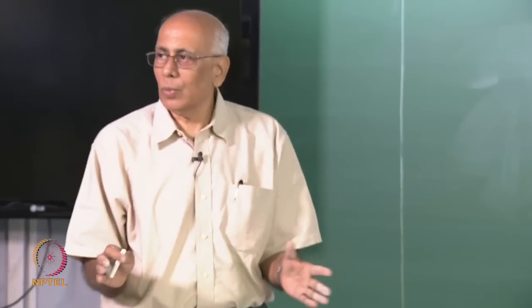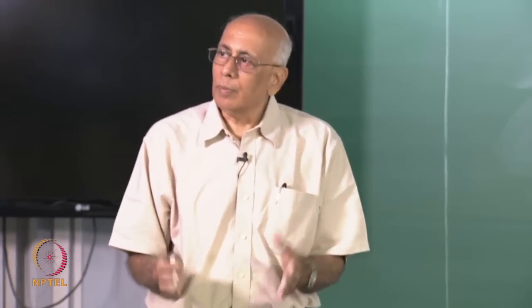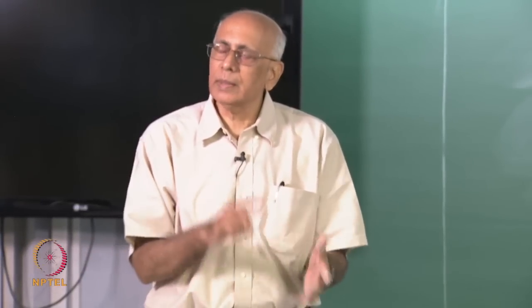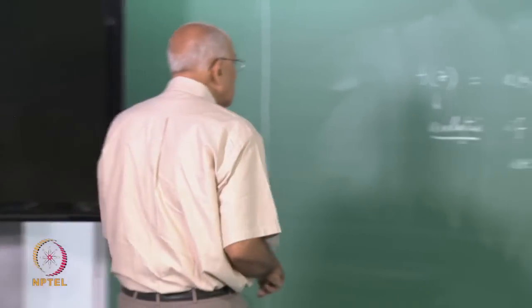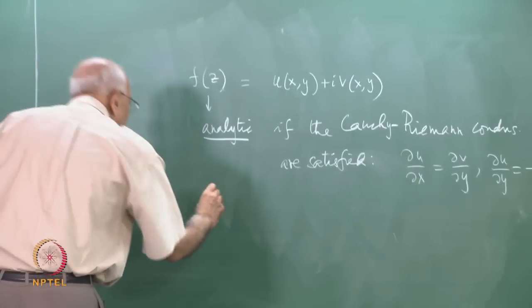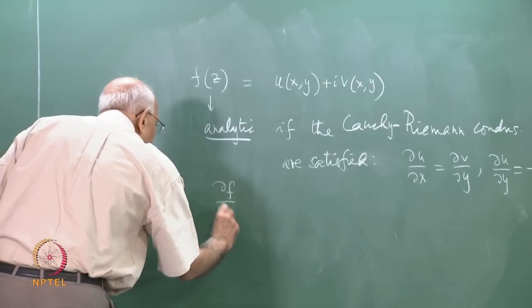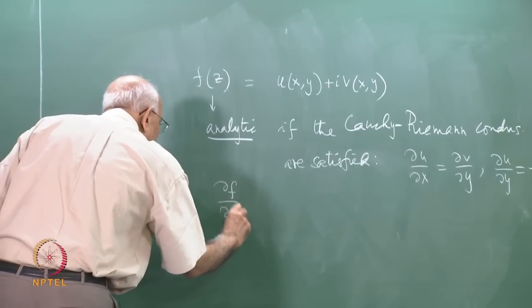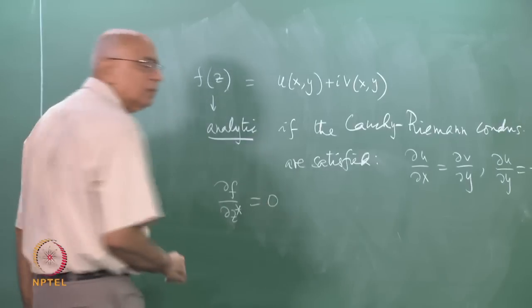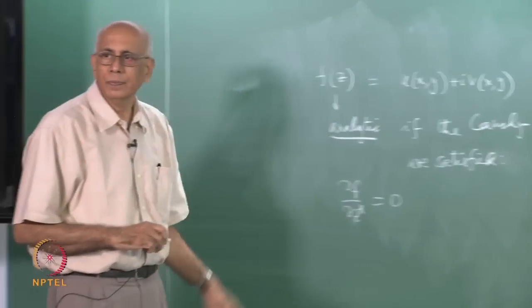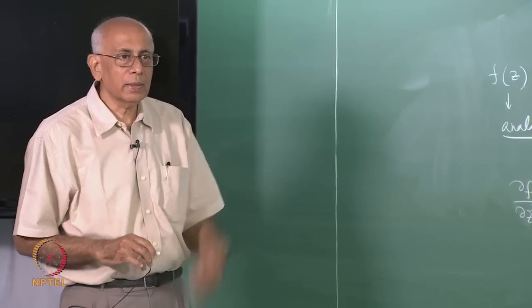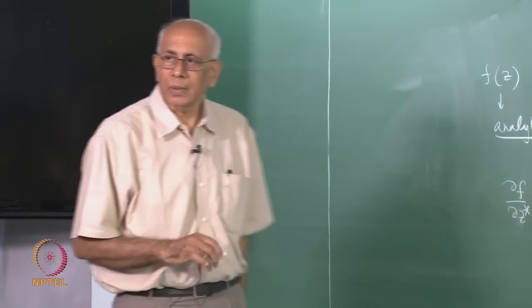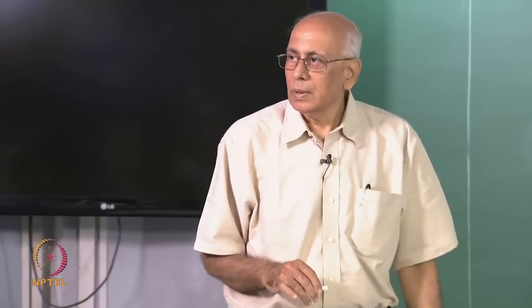What the Cauchy-Riemann conditions really mean is that f is not a function of the other linearly independent combination z star = x minus i y. It is a function of x and y, but only through the combination x plus i y with no reference to x minus i y. So we say that an analytic function is one for which ∂f/∂z* equals zero — no dependence on z star at all.